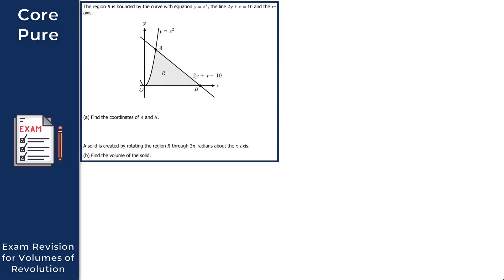For the last question, question 3, we have region R bounded by the curve with equation y equals x squared, the line 2y plus x equals 10, and the x-axis, as shown in the diagram. Part A asks us to find the coordinates of A and B. Point A is the intersection between the straight line and the curve, and point B is the intersection between the straight line and the x-axis.